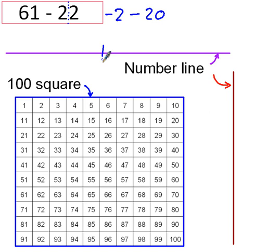On a number line, I would write down the starting number, which is 61, take away 2, take away 20. 61 take away 2 is 59, and then 59 take away 20 is 39.